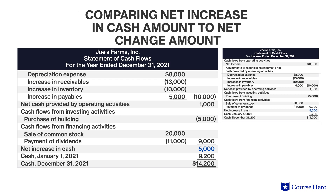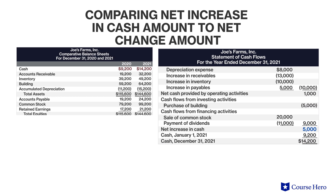After determining the three cash flow activity sections — operating, investing, and financing — the amounts are summed. The net cash change amount over the year was $5,000, which agrees with the difference between the 2020 and 2021 cash balance from the balance sheet.